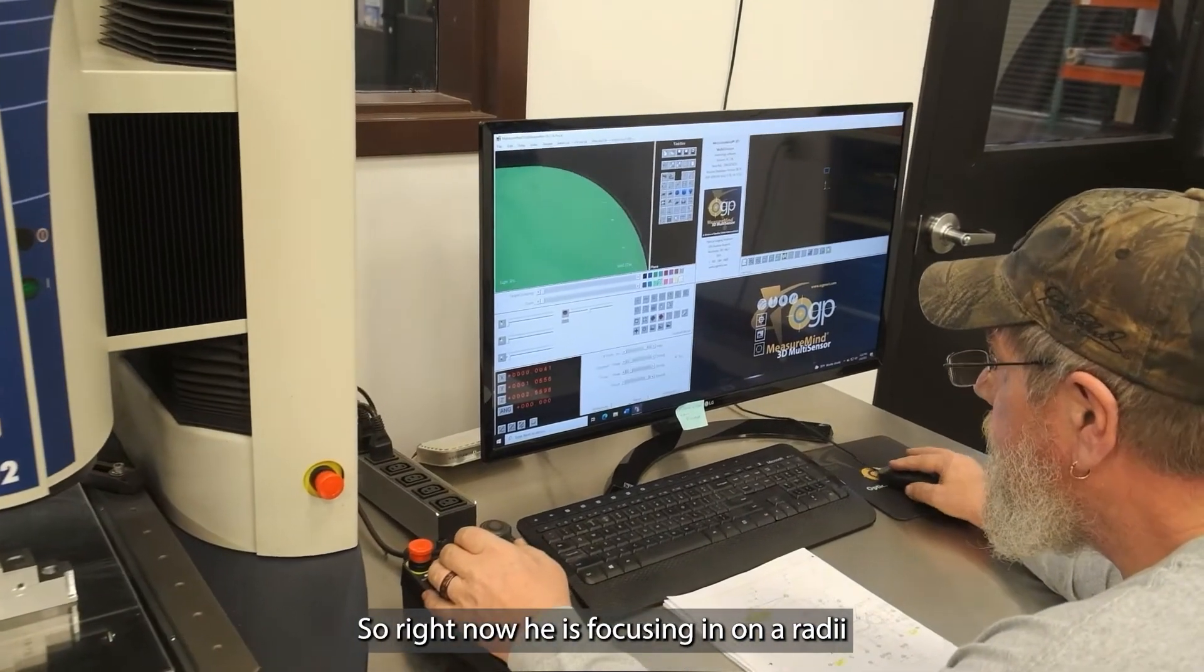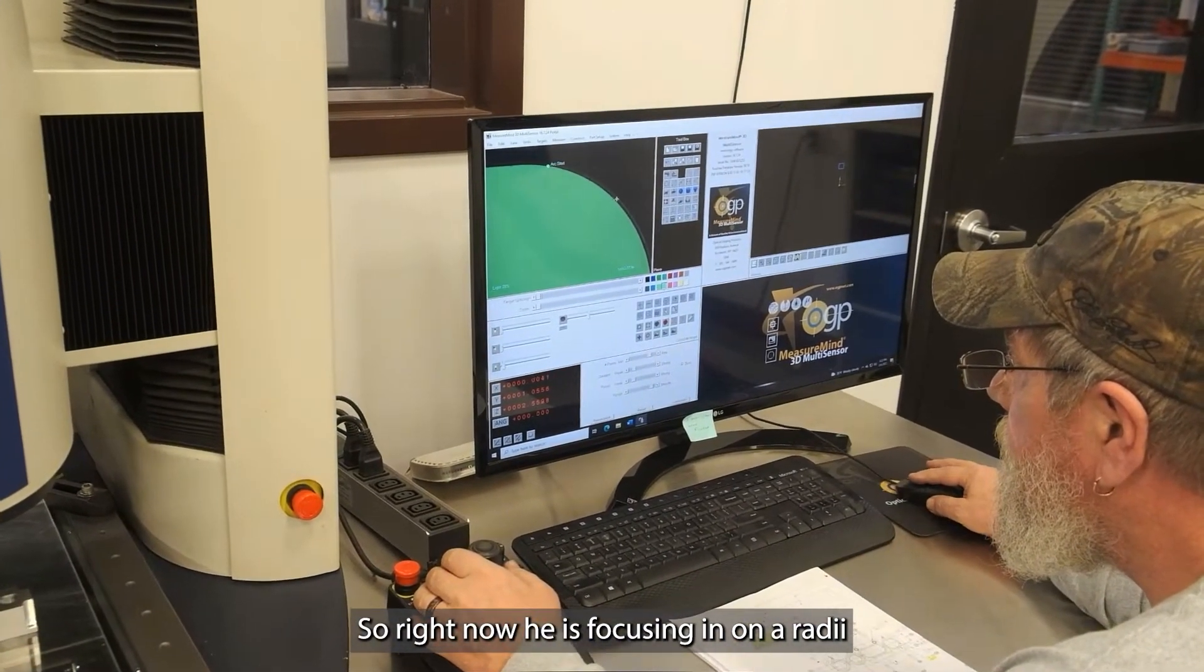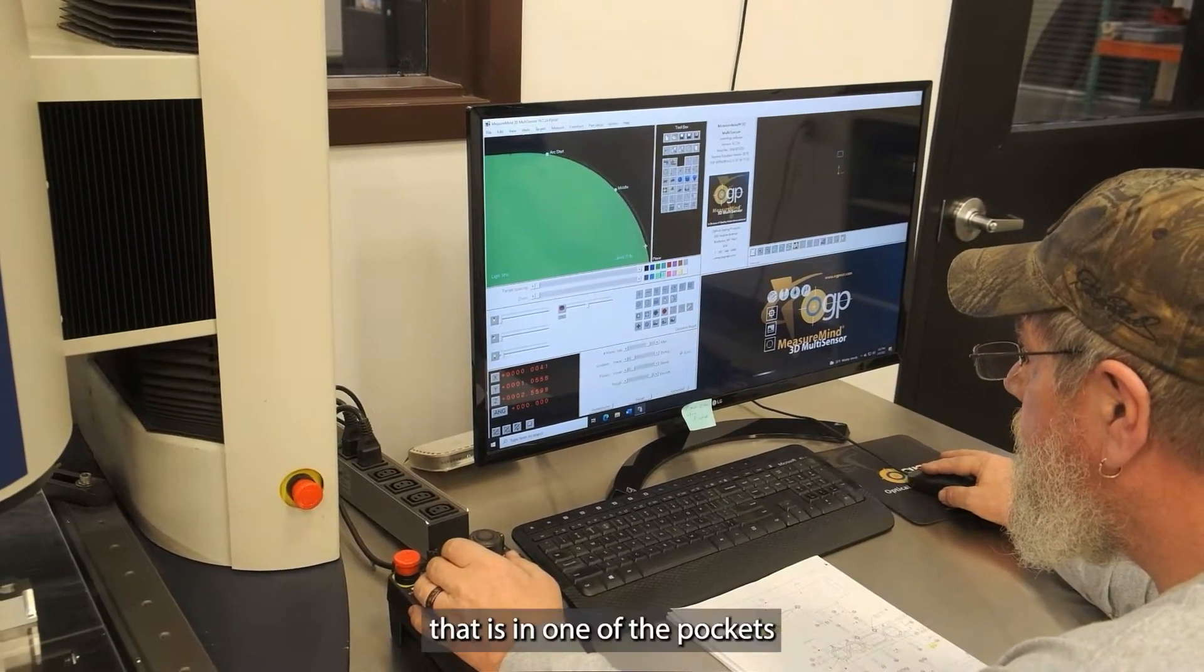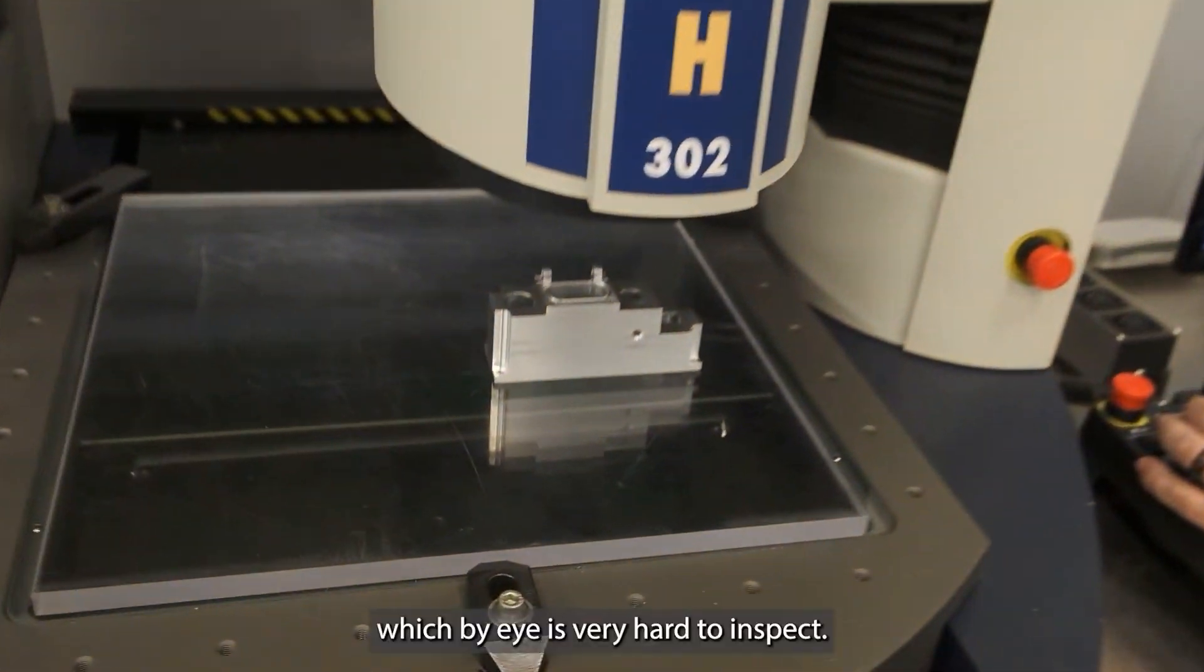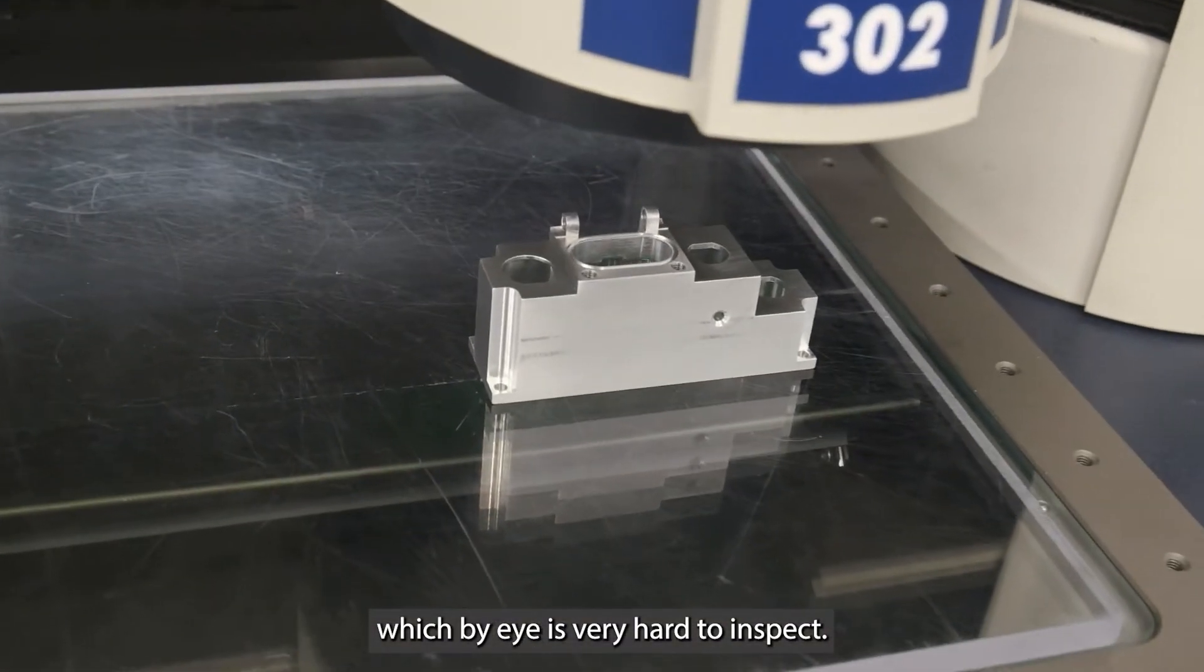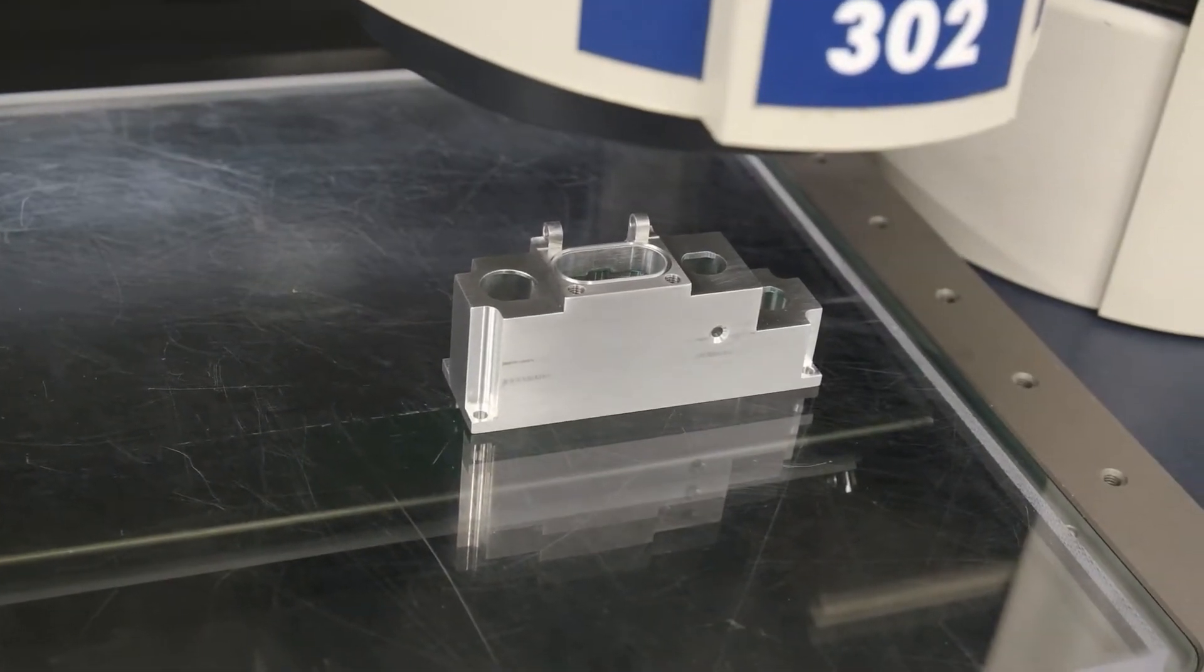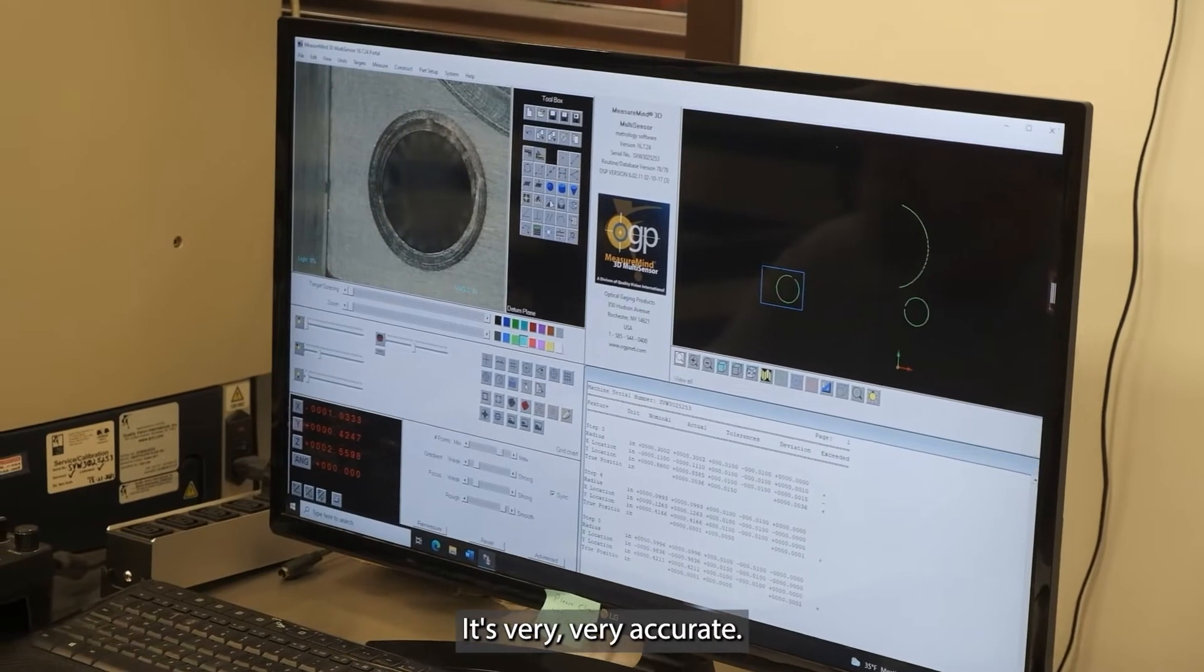So right now he is focusing in on a radii that is in one of the pockets on top of that part, which by eye is very hard to inspect. That's why we use this machine. It's very, very accurate.